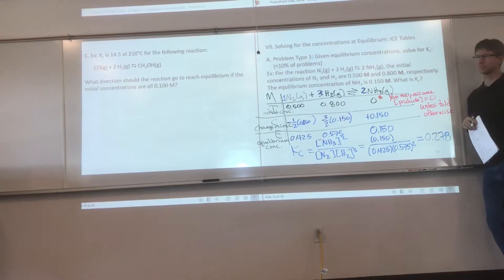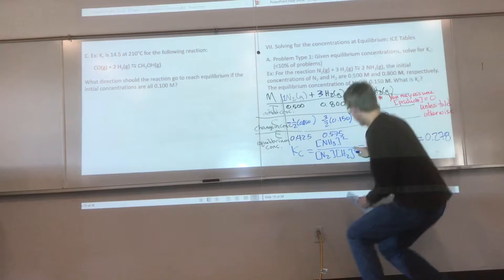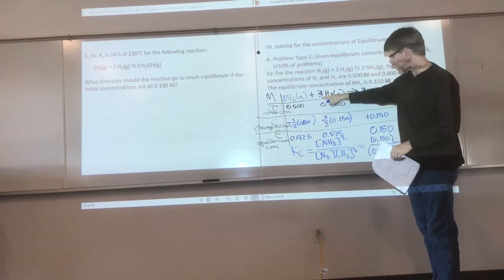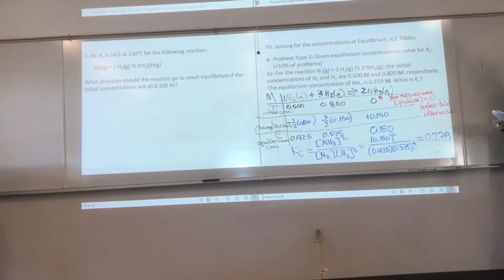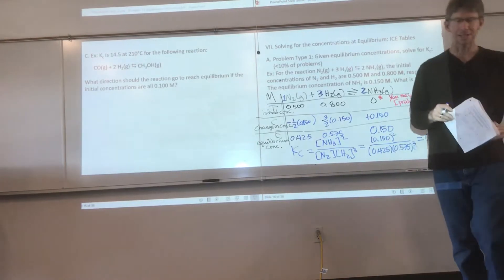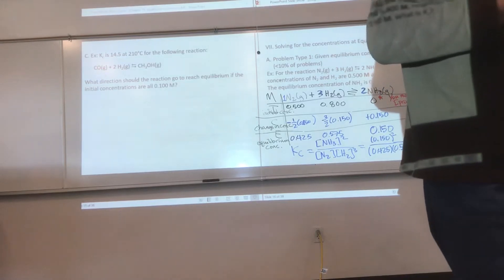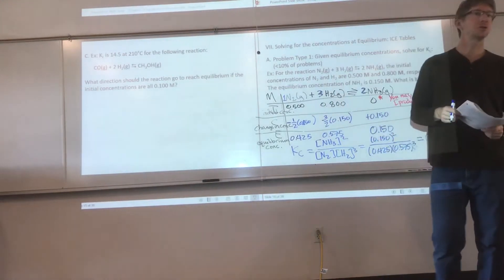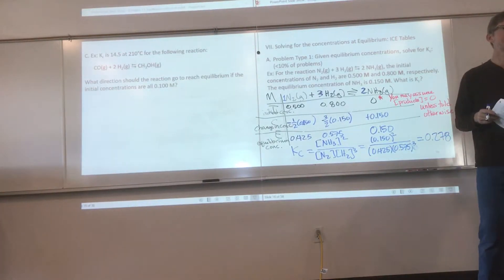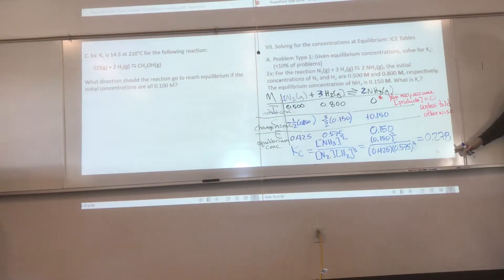Now we make the Kc expression: concentration of NH3 squared over concentration of N2 times concentration of H2 cubed. Plugging in the equilibrium values gives Kc = 0.278. Equilibrium constants don't have units—the longer answer involves physical chemistry. You will almost never see them reported with units.